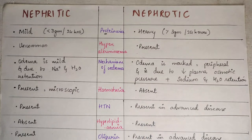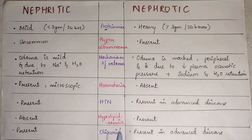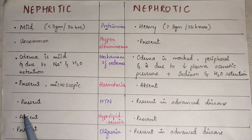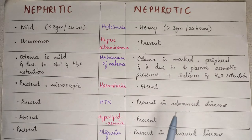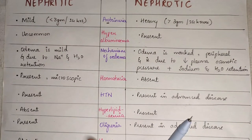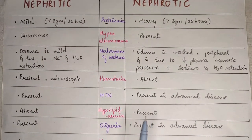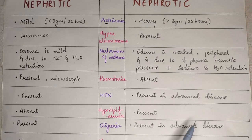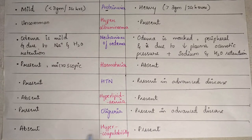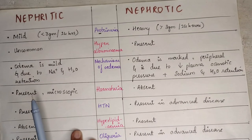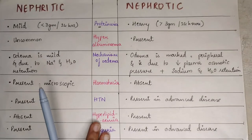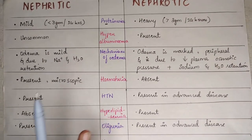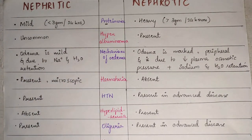Hematuria is present microscopically in nephritic syndrome but absent in nephrotic syndrome. Hypertension is mainly seen in nephritic syndrome but can appear in very advanced nephrotic cases. Hyperlipidemia is absent in nephritic syndrome but present in nephrotic syndrome. Oliguria is present in advanced nephritic disease, while hypercoagulability is absent in nephritic syndrome and present in nephrotic syndrome.